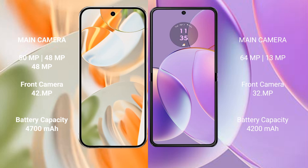The Google Pixel 9 Pro features a rear triple camera setup: 50MP plus 48MP plus 48MP, and a 42MP front camera. The Motorola G40 features a rear triple camera setup: 64MP plus 13MP, and a 3MP front camera.